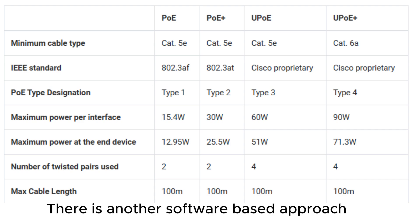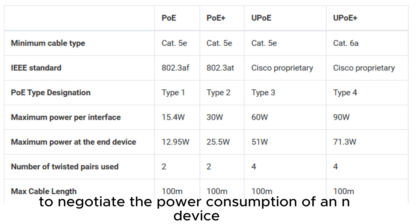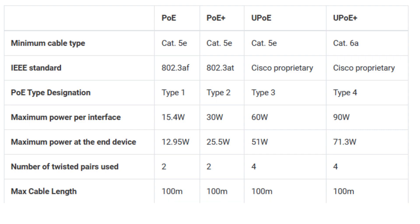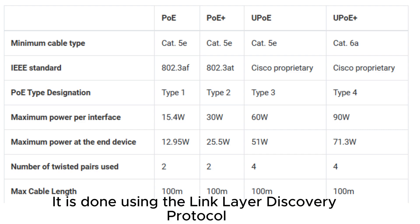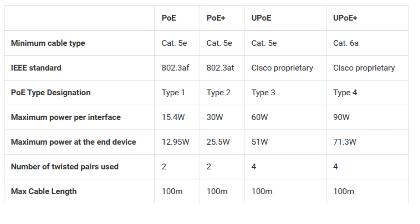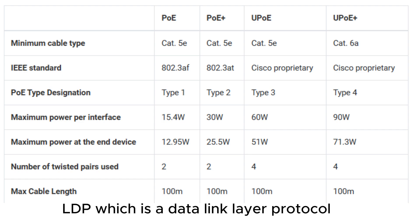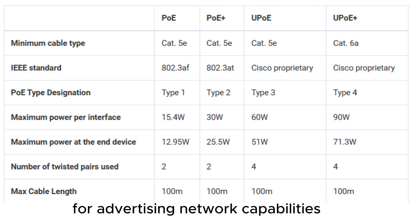There is another software-based approach to negotiate the power consumption of an end device. It is done using the Link Layer Discovery Protocol (LLDP), which is a data link layer protocol for advertising network capabilities.